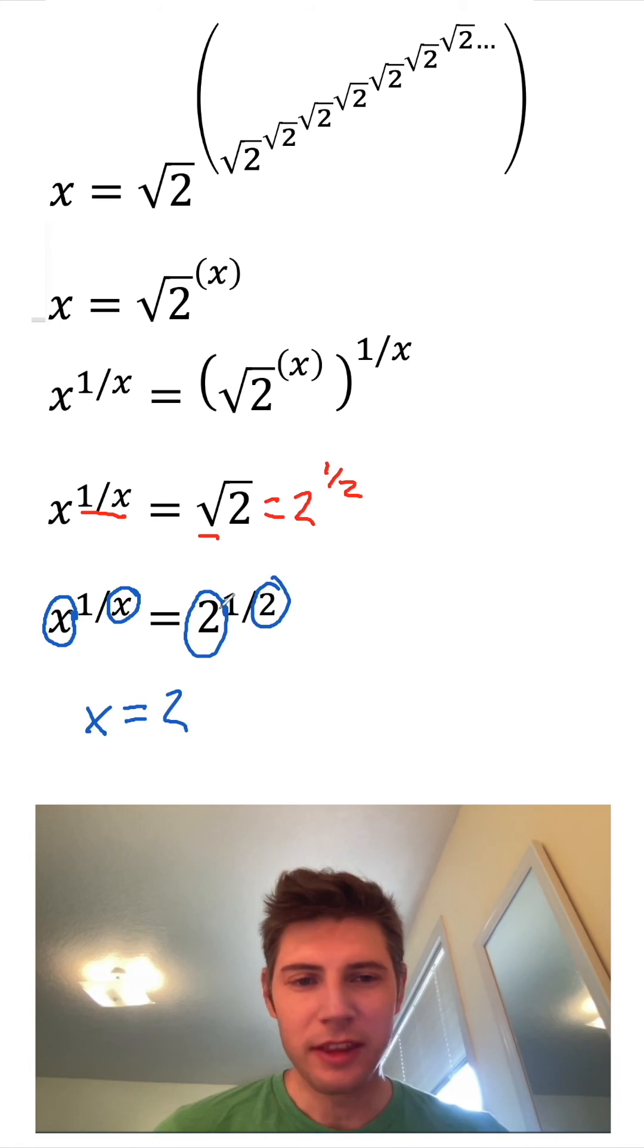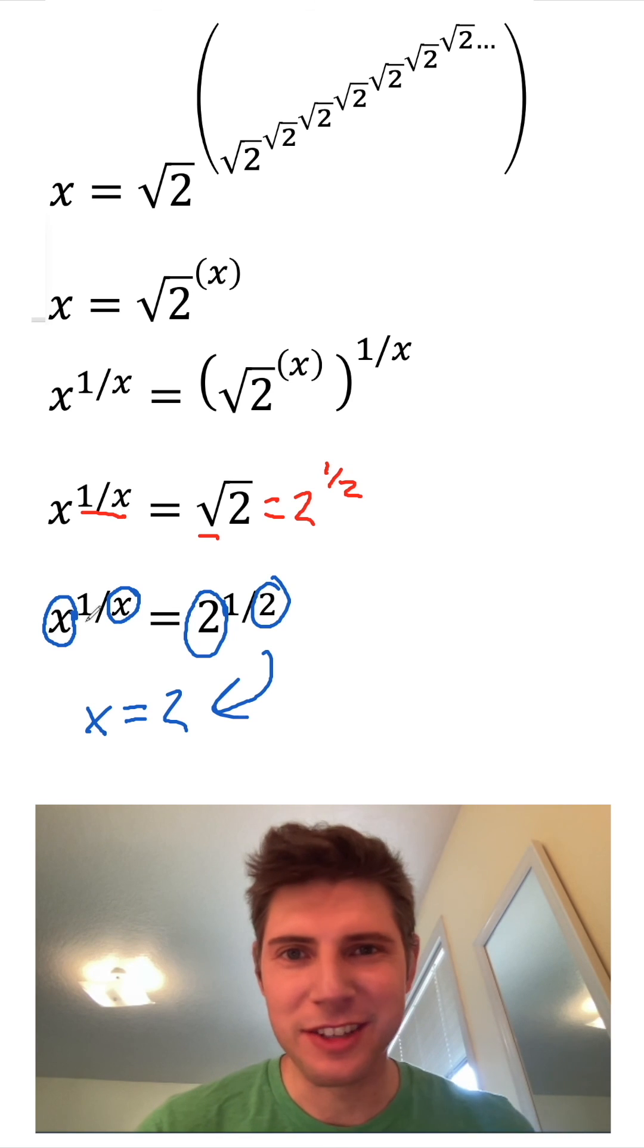If we made X equal to two, that would make both these sides the same thing because X to the one over X would then be two to the one over two. So we can conclude that X equals two.